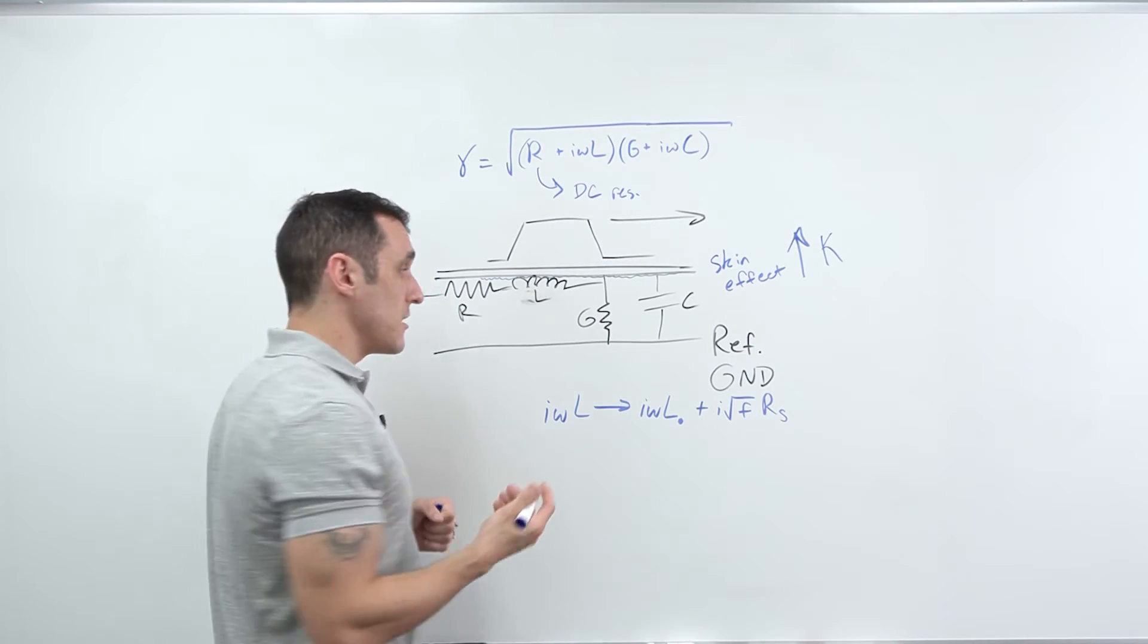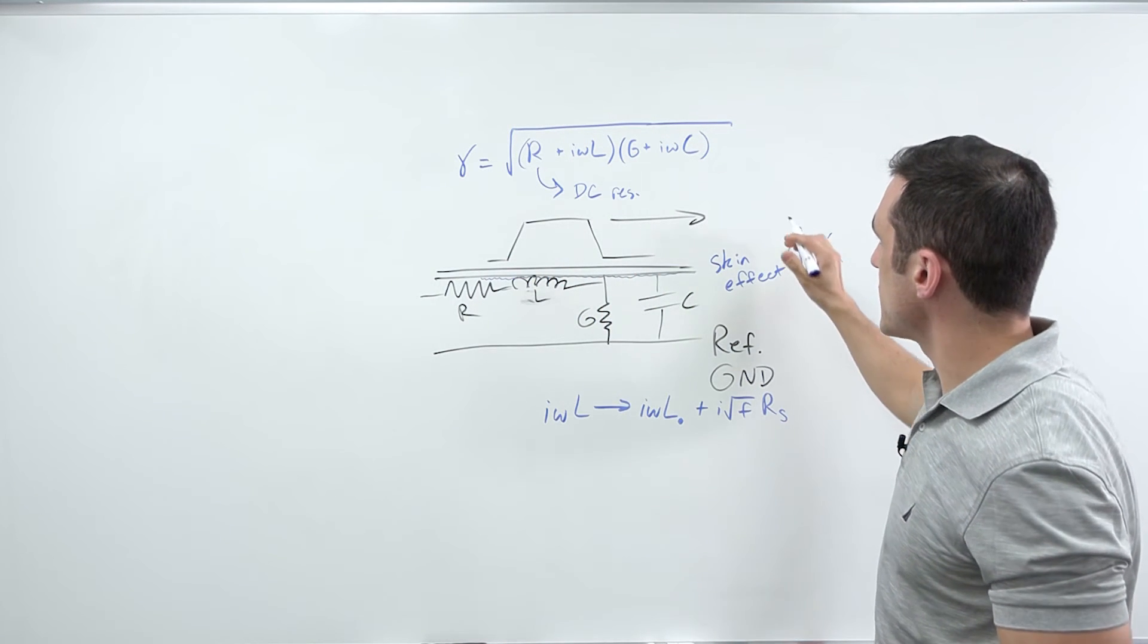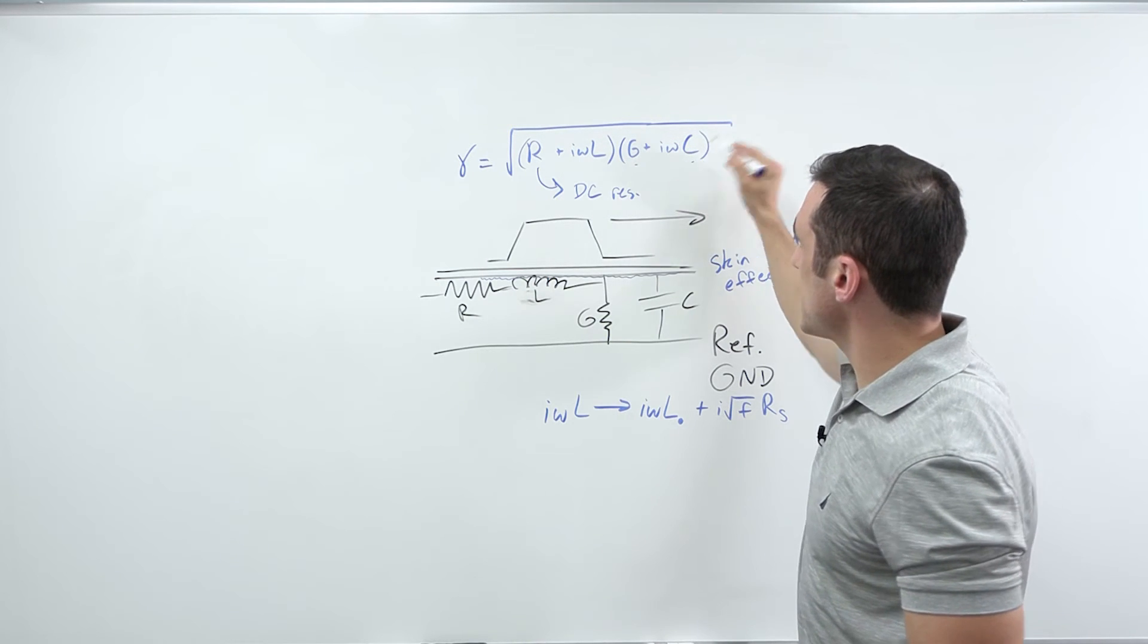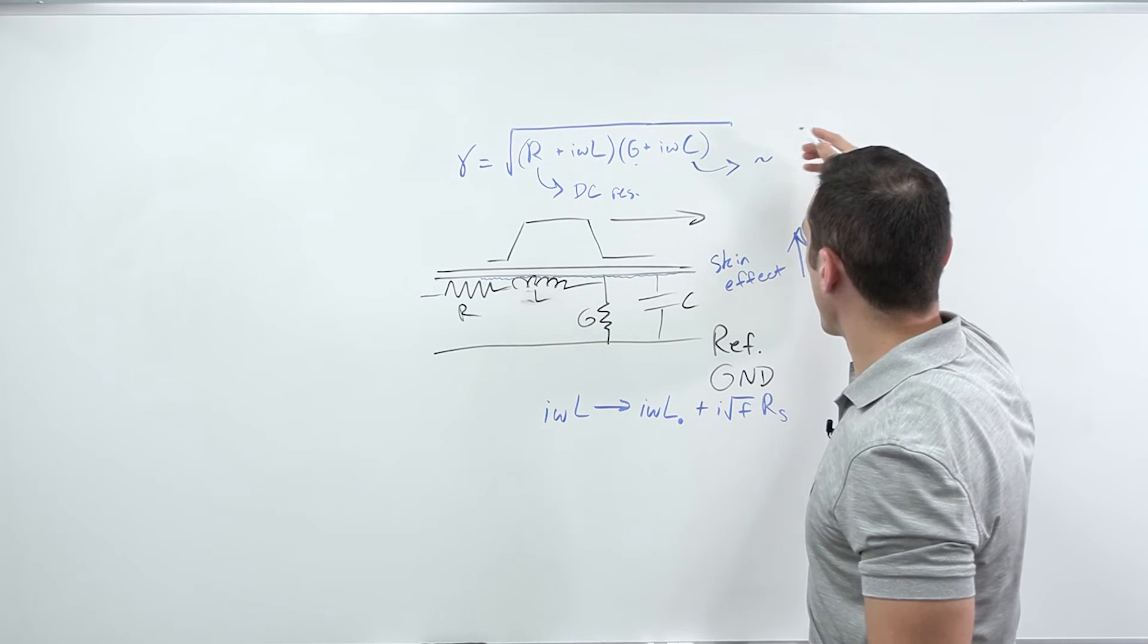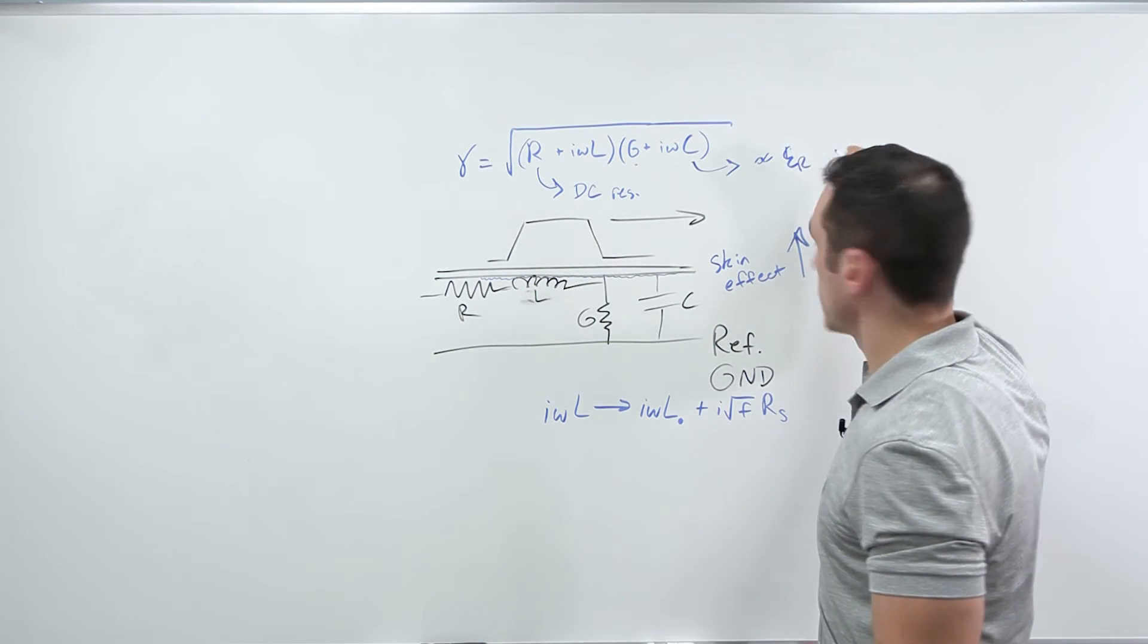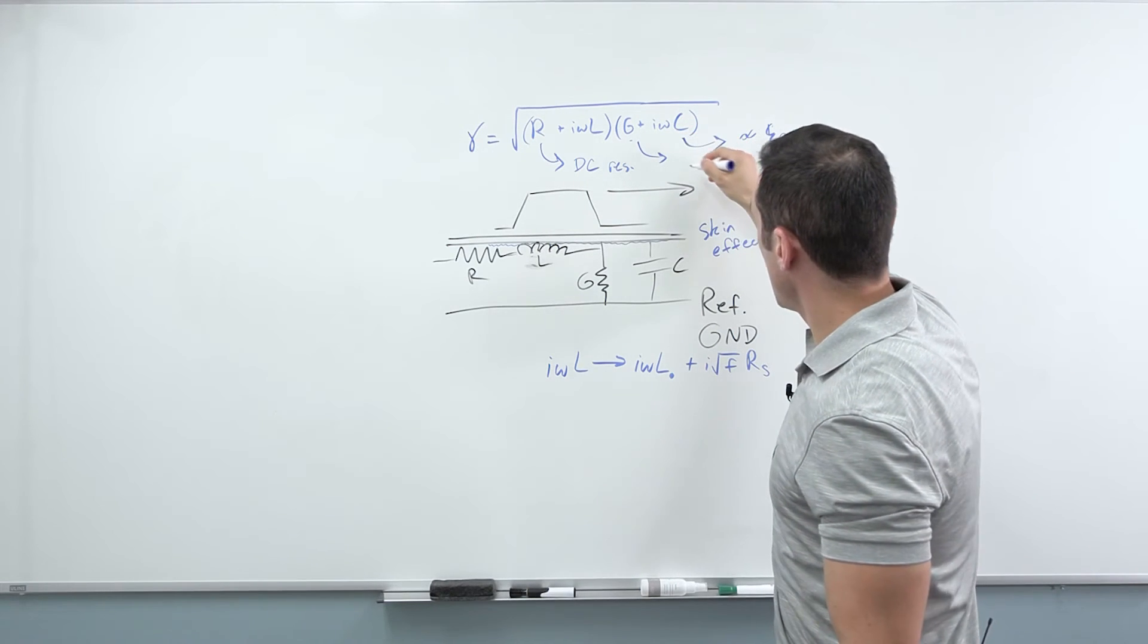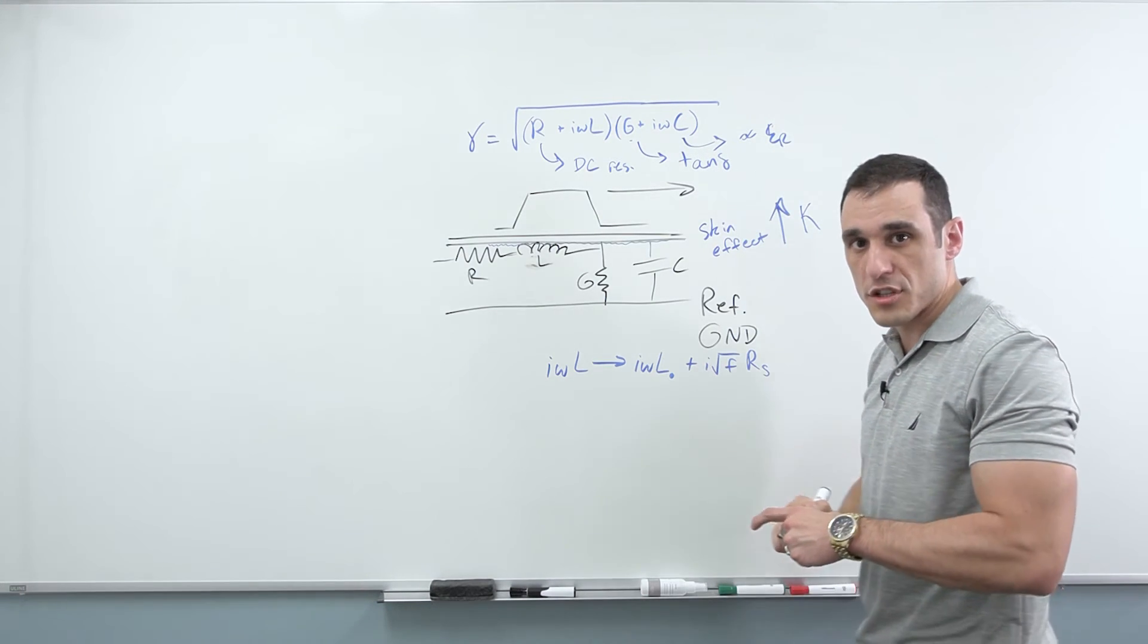Now, the next effect that we need to consider here in terms of how everything affects different frequencies is what happens with this G term and the C term. Now, remember C is proportional to the real part of the dielectric constant and G is proportional to the loss tangent. So if you look up the definition of loss tangent, you'll know that it is essentially the negative, and I use the negative sign intentionally.